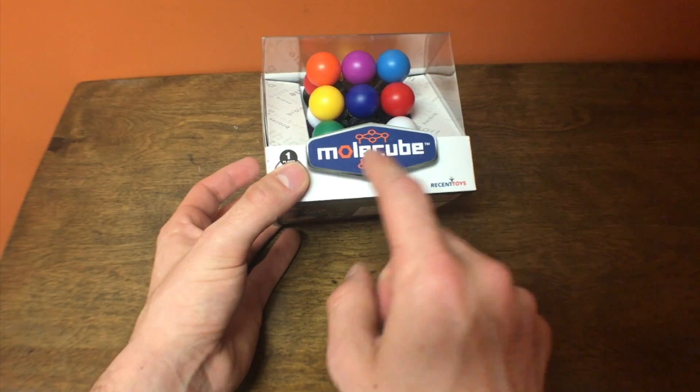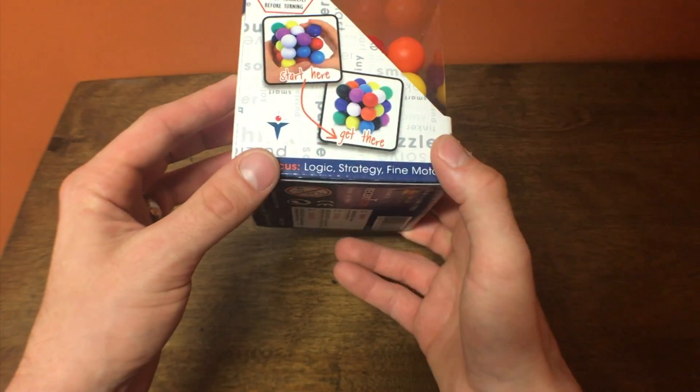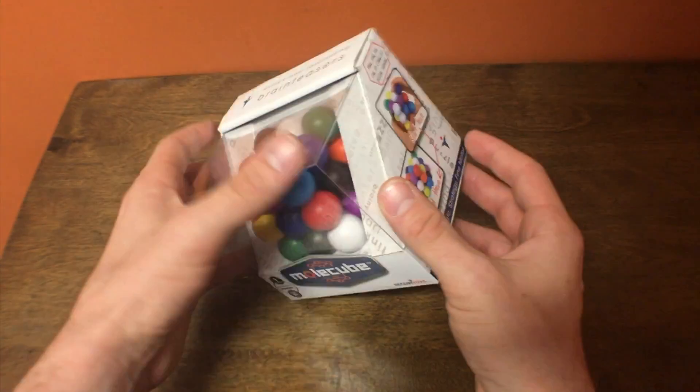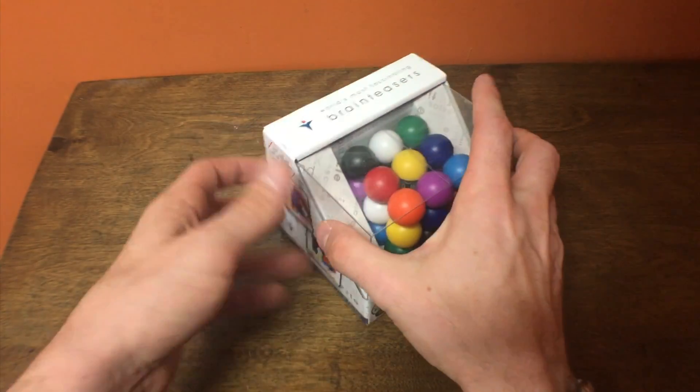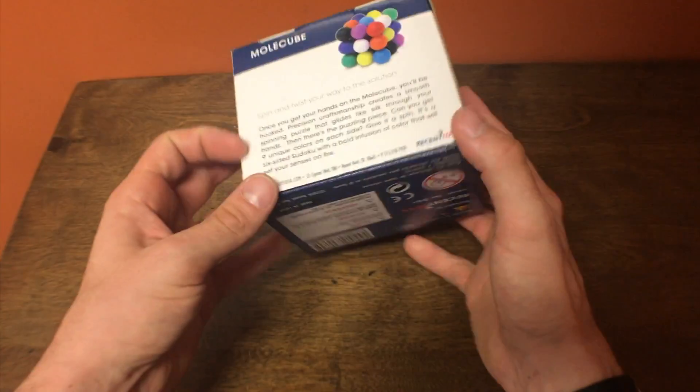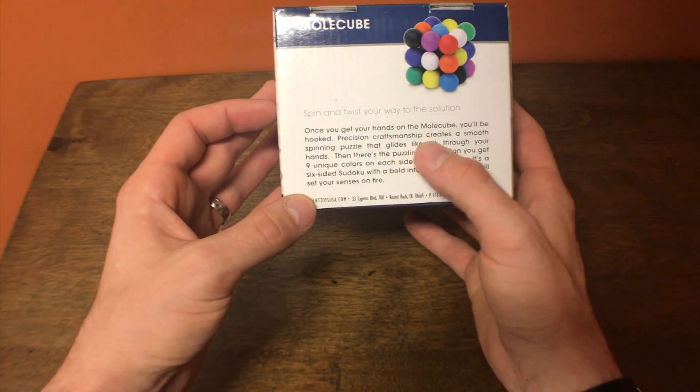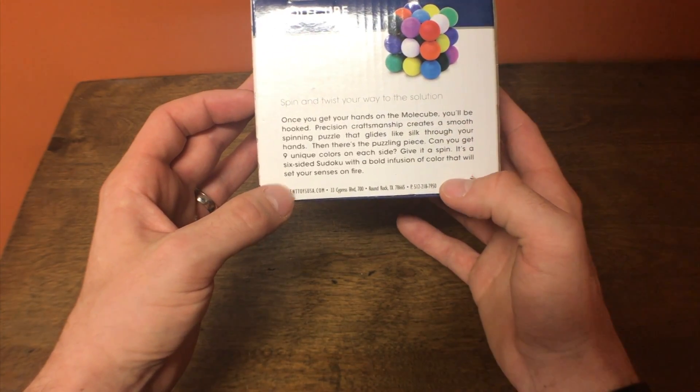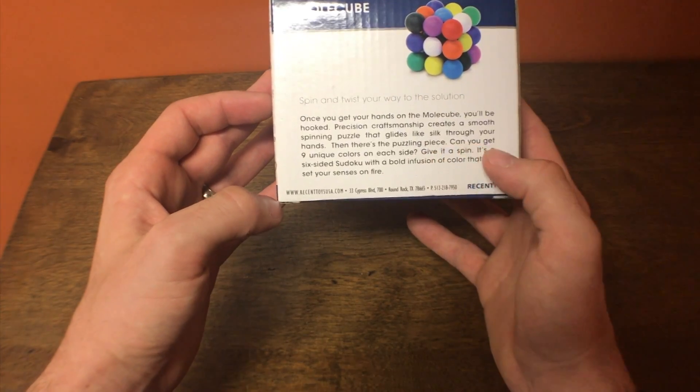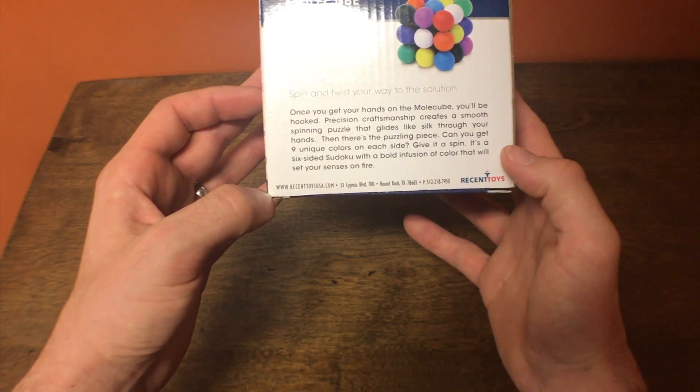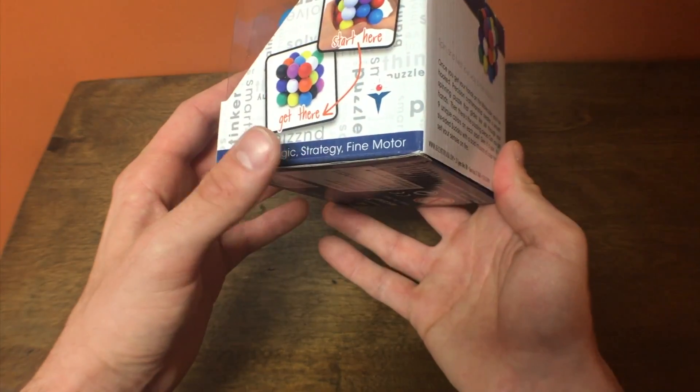This looks like Molecube, and I'm pretty sure it's Molecube. The way it works is like a Sudoku - every side should have one of each nine colors. So let's look at this real quick. Precision craftsmanship creates a smooth spinning puzzle that glides like silk through your hands. Can I get nine unique colors on each side? Give it a spin. It's a six-sided Sudoku with a bold infusion of color that will set your senses on fire.